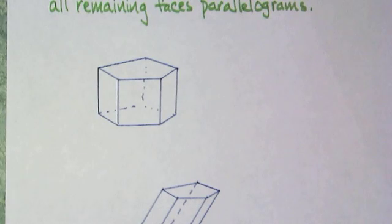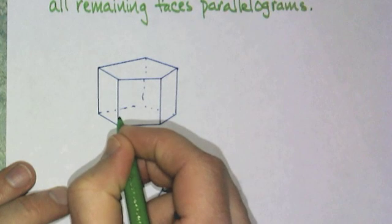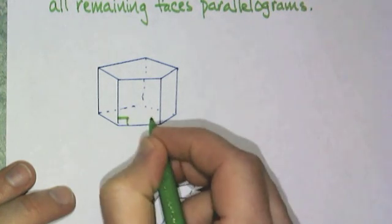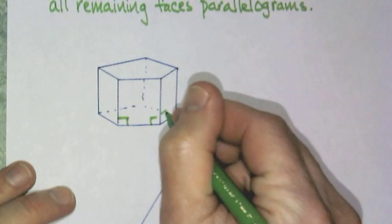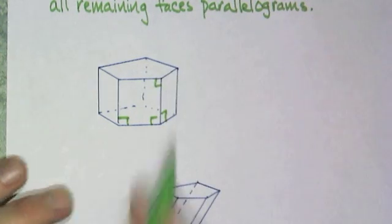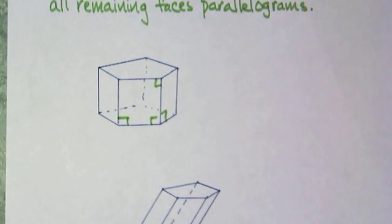Well, so you're saying, well, how do I know the difference? Well, this one, if the parallelograms that are connecting are connecting at right angles, then it's called a right prism.